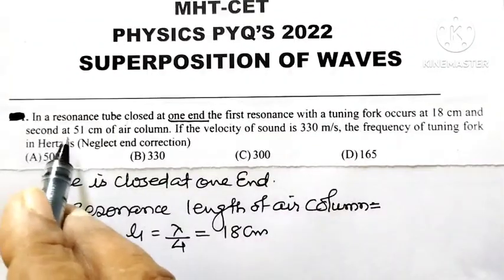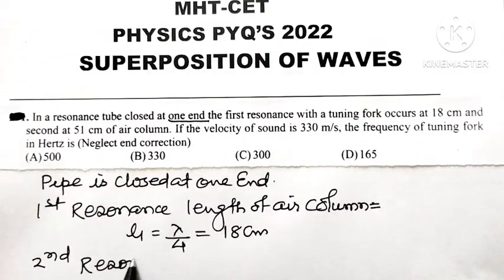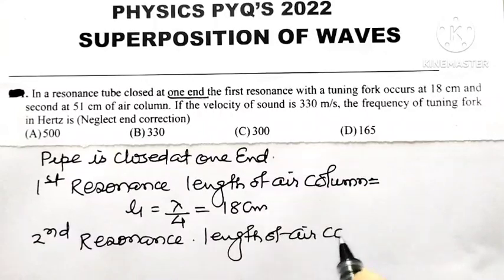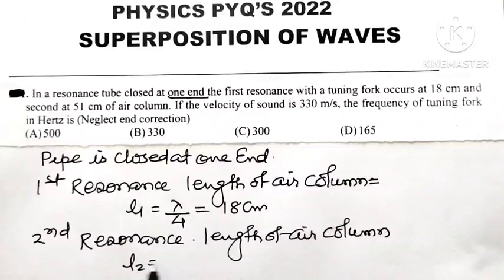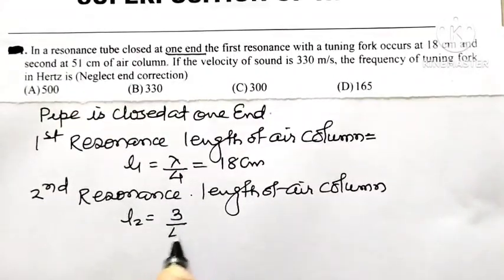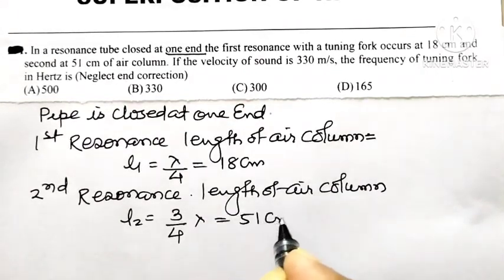And the second resonance occurs at 51 cm. For second resonance, the length of air column L2 is equal to 3/4 of wavelength lambda, and that is given as 51 cm.